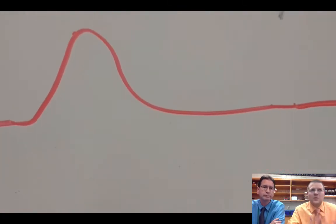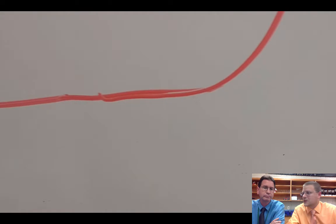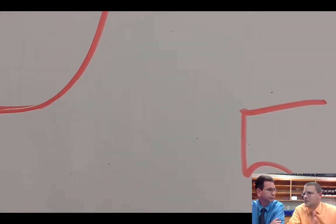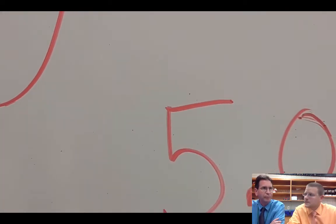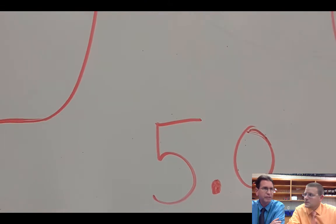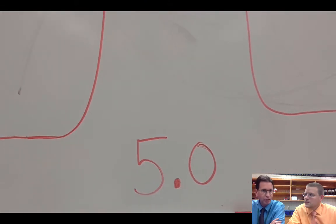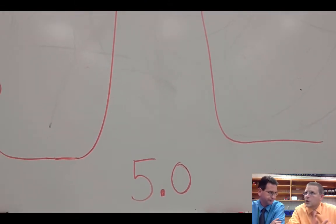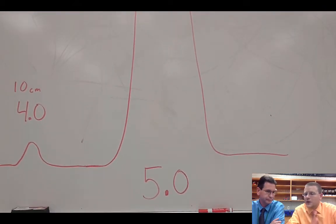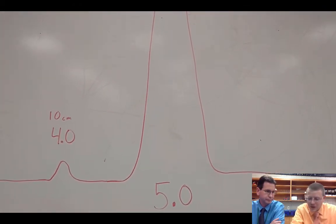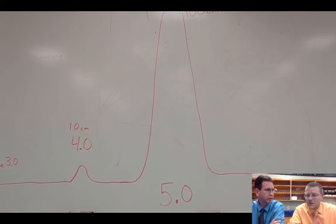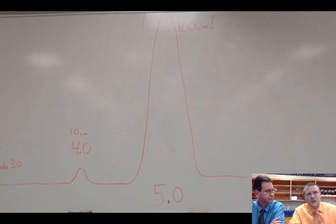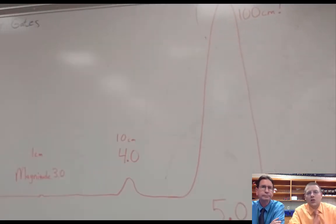So what happens when we get to a 5.0? How much bigger is that? Ten times bigger. Than what? Than the previous number, so that means ten times ten times bigger than the original number. So a magnitude 5 on the Richter scale versus a magnitude 3 is a hundred times bigger in height. So you can see by this illustration how large the 5.0 is versus a 3 and even a 4.